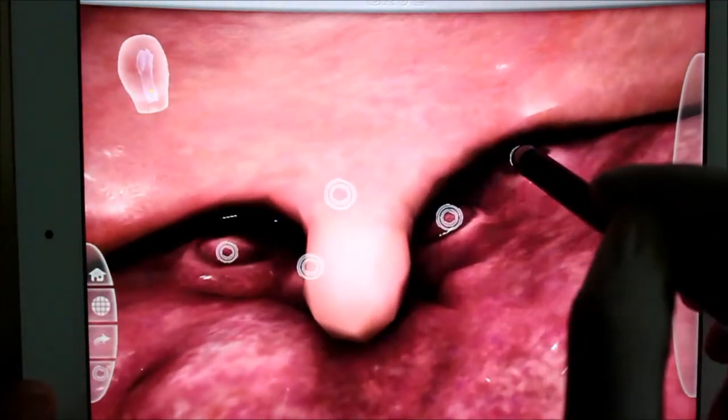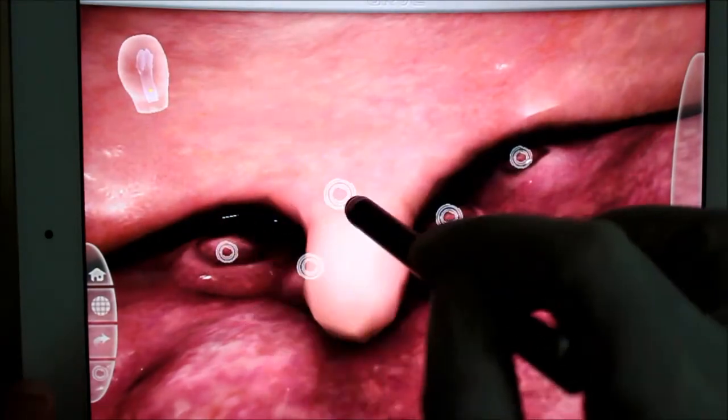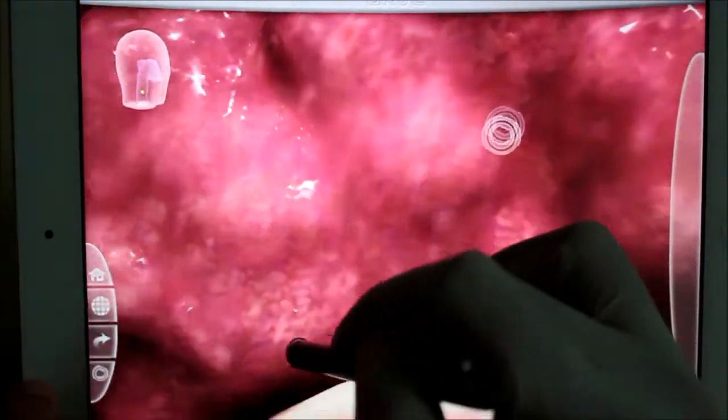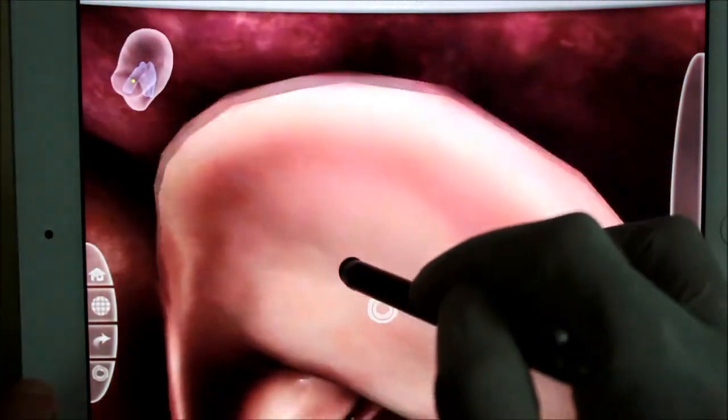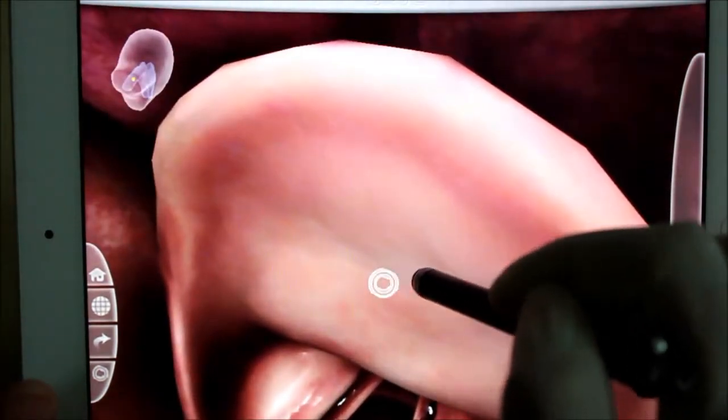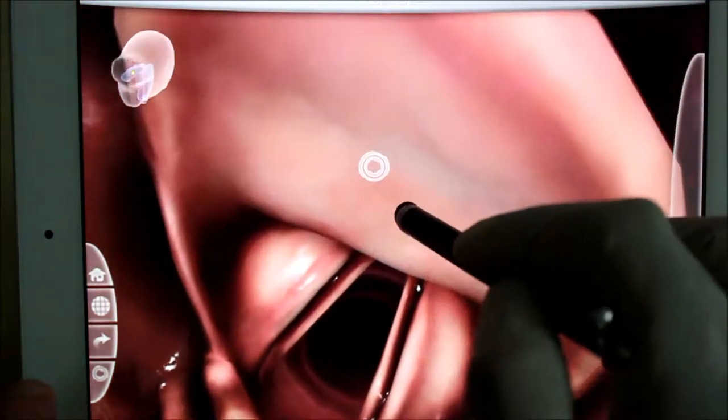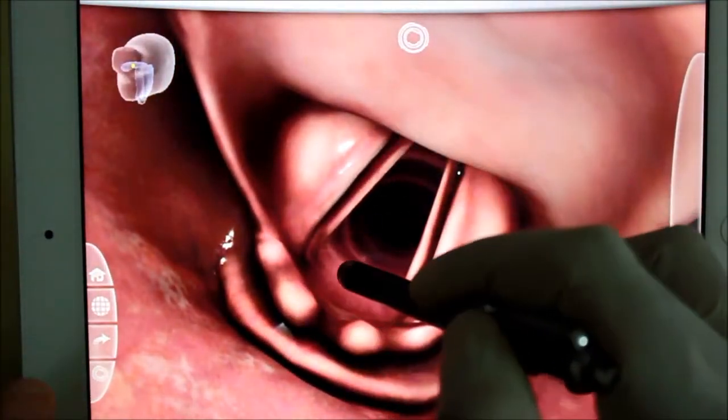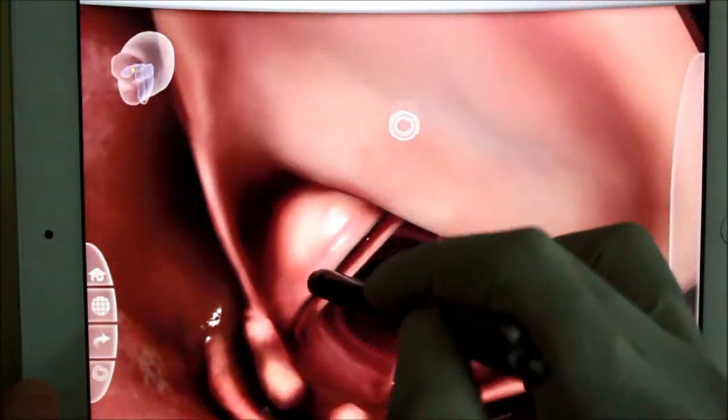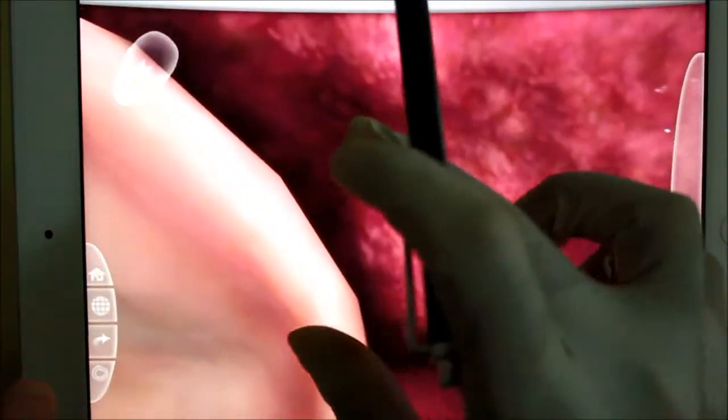we can see here the dorsum of tongue with circumvallate papillae. I hope you know the types of papillae on the tongue. Now going more deep we can see here the epiglottis.